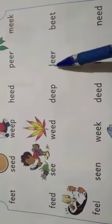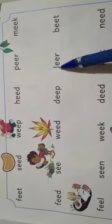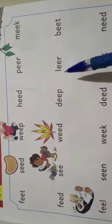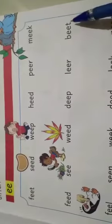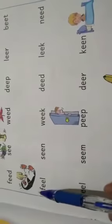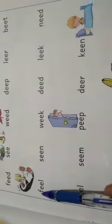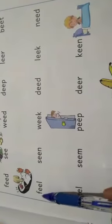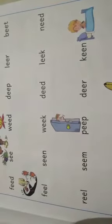Next word — L-double-e-r: leer. B-double-e-t: beat. Now look at the next word — F-double-e-l: feel.